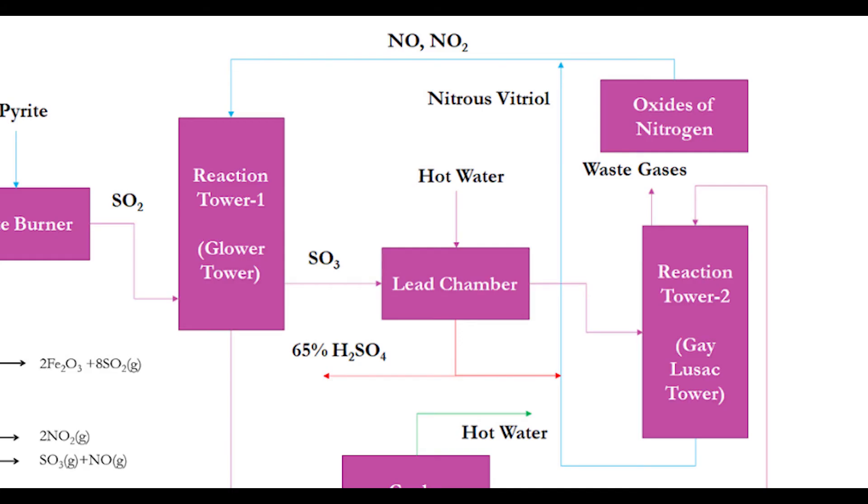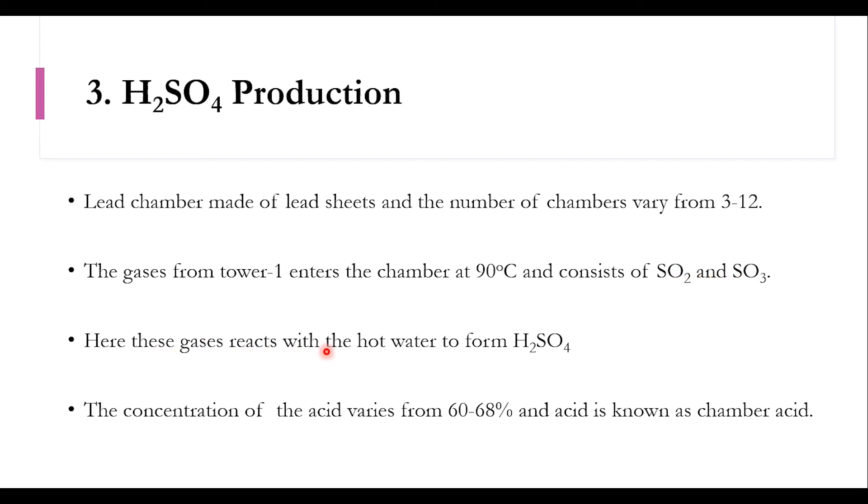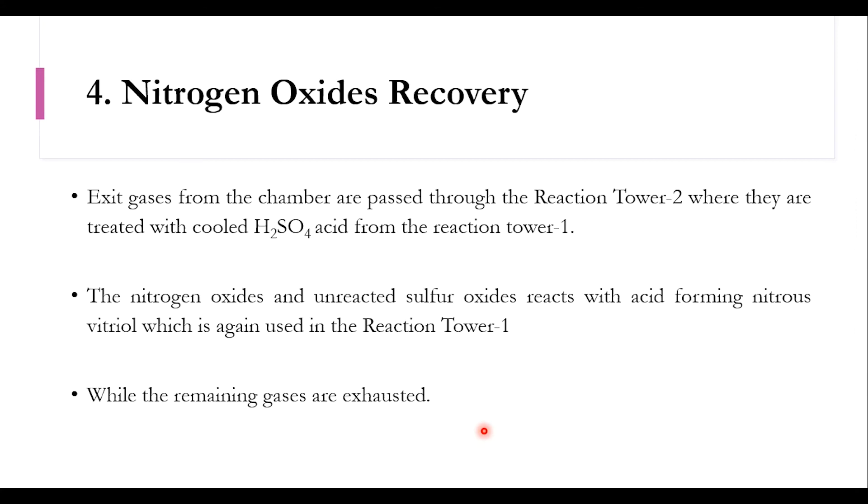In the third part, the lead chamber, which is made of lead steels, the number of chambers may vary from 3 to 12. The gases from tower one enter the chamber at 90 degrees centigrade, which mainly consist of SO2 and SO3. Here these gases react with water to form sulfuric acid (H2SO4), but the concentration obtained from this tower varies from 60 to 68% and is usually known as chamber acid.